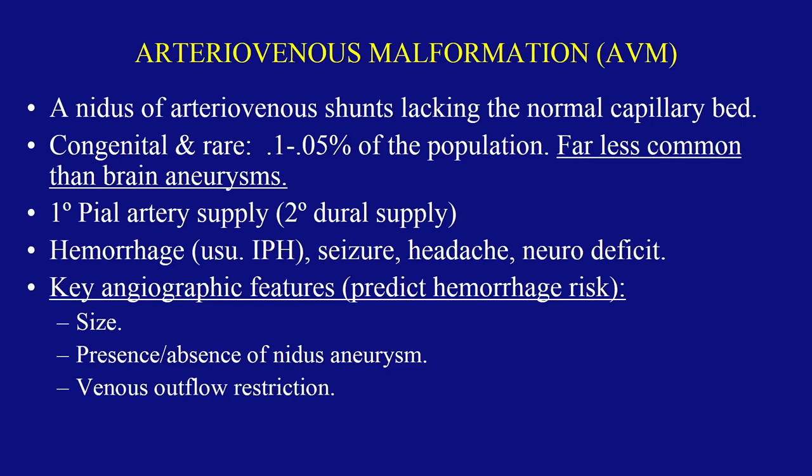The arteriovenous malformation is a nidus of abnormal tissue where there are shunts without a capillary bed, and therefore you get early venous filling. Very rare — perhaps one in a thousand. They're less common than aneurysms of the brain, and they come from the PIA and internal carotid artery supply. People present with headaches, and of course the key angiographic features we're aware of.